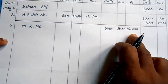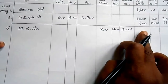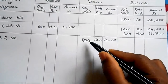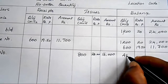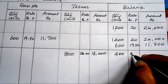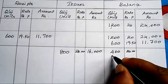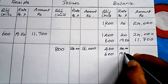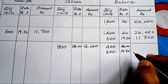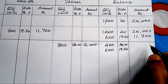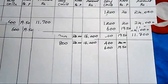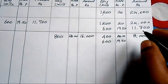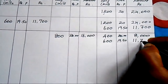After issuing 800 units from the opening lot of 1200, the balance is 400 units at ₹20 = ₹8,000. The 600 units purchased on 2nd are untouched: 600 × 19.50 = ₹11,700. Total balance: 1000 units in two lots.